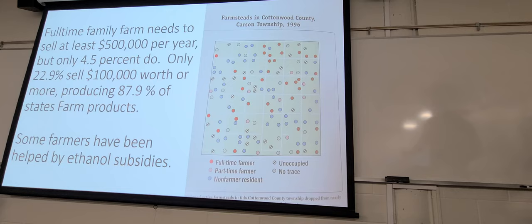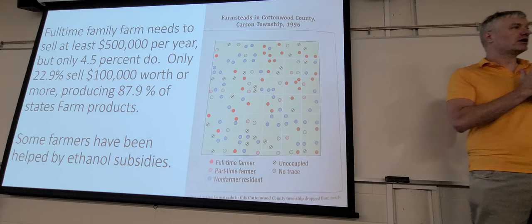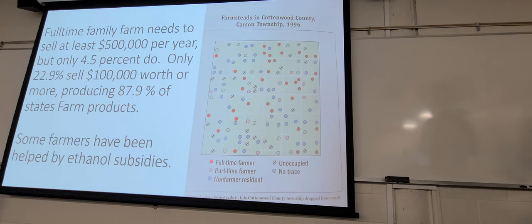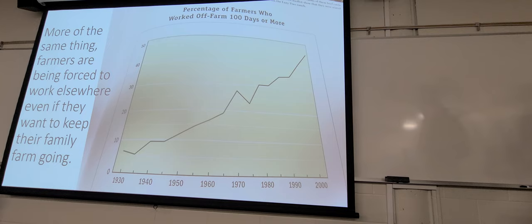To qualify as a family farm, you need to sell at least half a million per year, which as you can see, 4.5 percent of farmers do that. So a lot of farms are just not making that much money. The farmers who have to work off farm 100 days or more, you see this constant trend happening where most your money, most of your time is going to be spent elsewhere.